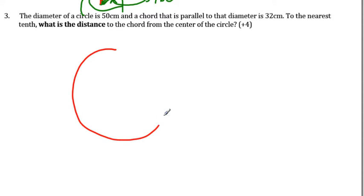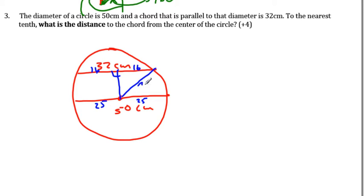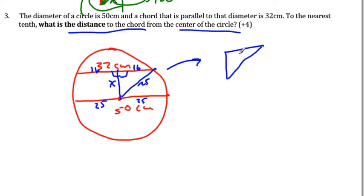Number three: the diameter of a circle is 50 centimeters, and a chord parallel to that diameter is 32 centimeters. Drawing a perpendicular line from the center to the chord, we know it bisects the chord, so each half is 16. The radius is 25 (half of 50), and drawing a radius to the chord endpoint also gives 25. We want the distance from the center to the chord — that's x in a right triangle with legs x and 16, and hypotenuse 25.